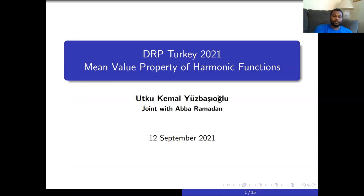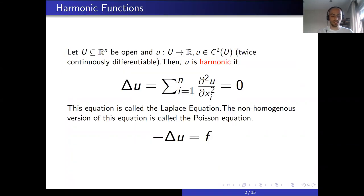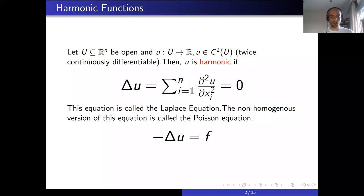Thank you. Hello everyone. Today I will talk about this interesting property of harmonic functions which is called the mean value property. First, let us start with defining a harmonic function. Let this capital Ω be any open subset of ℝⁿ, and U will be a twice continuously differentiable real-valued function from Ω. This Δ operator is called the Laplace operator, which is defined as the sum of second partial derivatives with respect to each variable. We call this function U harmonic if its image under the Laplace operator is equal to zero.